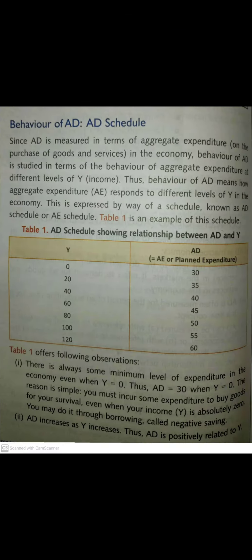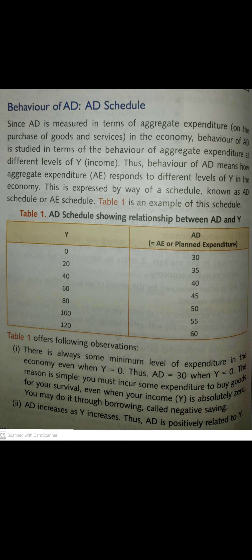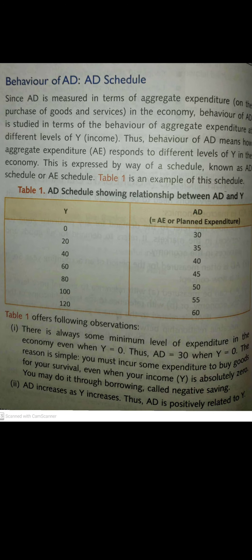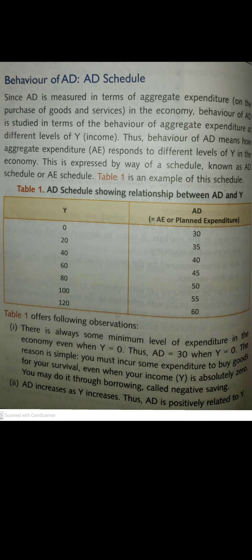Now I have taken a table from the book — the AD schedule — showing the behavior of AD at different levels of income. Y is income and AD is aggregate demand, also known as planned expenditure or aggregate expenditure. When income Y is zero, aggregate demand is 30. You might wonder how expenditure can be 30 when income is zero.